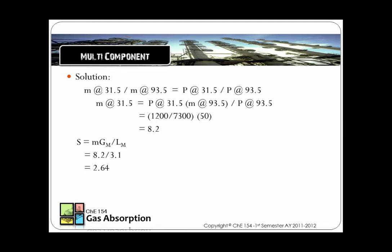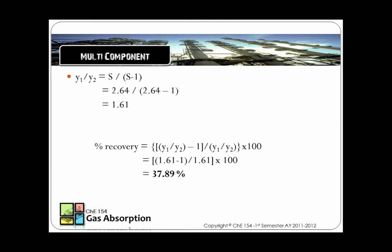The stripping factor is equal to Mgm over Lm. The S that was computed is 2.64. This stripping factor will be used to compute the limiting factor or value, which will then be used to compute the percent recovery. The limiting value that is computed is 1.61. Using this model, the percent recovery is about 38%. This is the final answer.